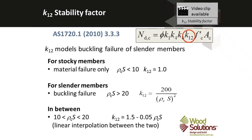The expressions for the stability factor are identical to those for bending members. If we have a stocky member, the slenderness times its material constant is going to be less than 10, and our k12 factor is 1. On the other hand, if we have a very slender member, k12 is a function of the slenderness squared — the higher the slenderness, the lower the k12 factor, and hence the lower the capacity of the member.